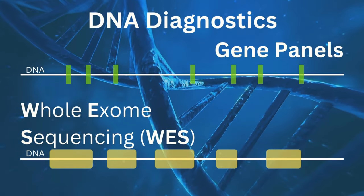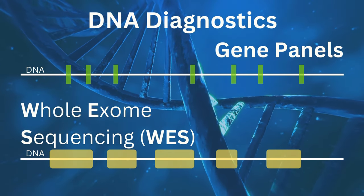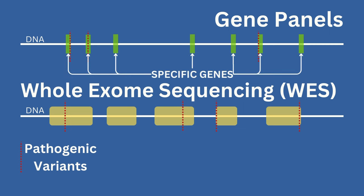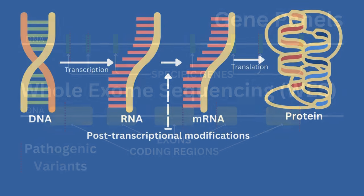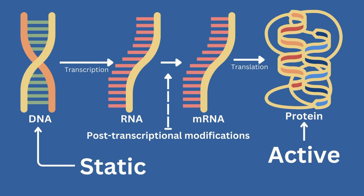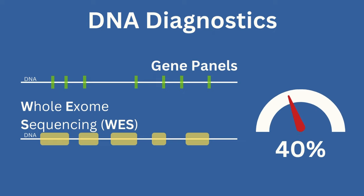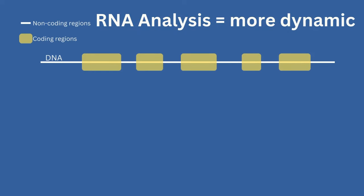Nowadays, targeted gene panels and whole exome sequencing are the most common clinical DNA sequencing tests for diagnosis. These DNA tests allow us to find possible pathogenic variants in specific genes and coding regions of the genome. However, DNA sequencing only examines a small portion of the genome and provides a static picture of activity. DNA sequencing has an average diagnostic yield of around only 40%. Instead, a more dynamic and comprehensive view of the genome can be achieved through assessing the RNA.